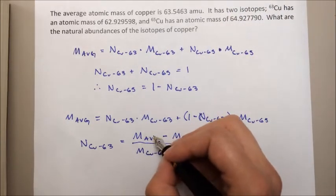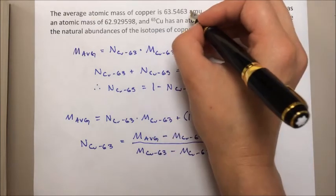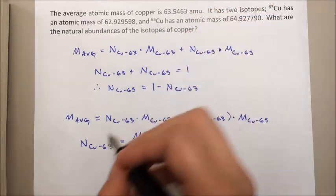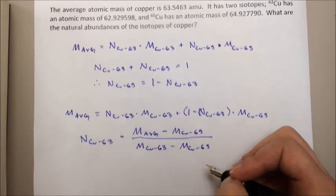And we know the average atomic mass also from the problem up here. If you plug in those numbers and crunch them down, you get that the natural abundance of copper 63 is 0.6915.